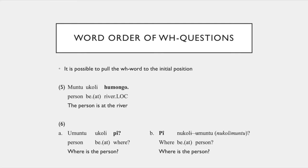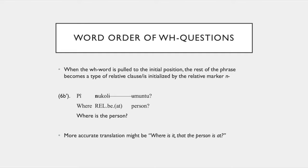For example, if we have 'the person is at the river', the regular in situ version Nico gave was 'umunansu ukimba pi' — basically the same thing with 'pi'. And if we put 'pi' at the beginning, he said 'pi n-ukulimunto'. The dash indicates that the vowels merge there. When the WH word is pulled to the initial position, the rest of the phrase becomes a type of relative clause, initialized by the relative marker 'N', and then whatever follows. A more accurate translation might be 'where is it that the person is', but the speaker said it was interchangeable.